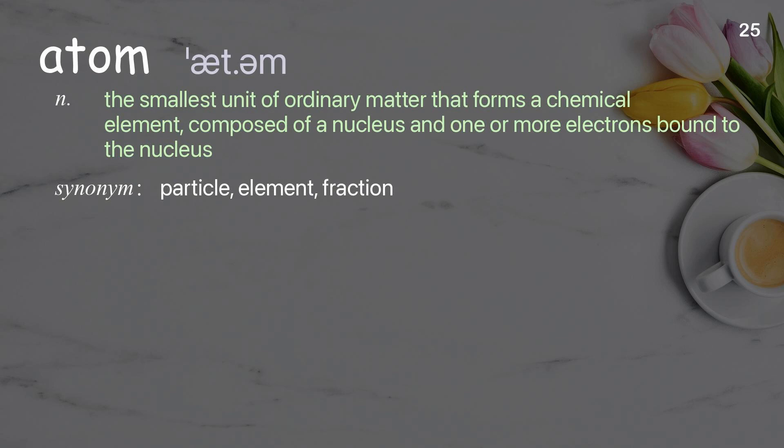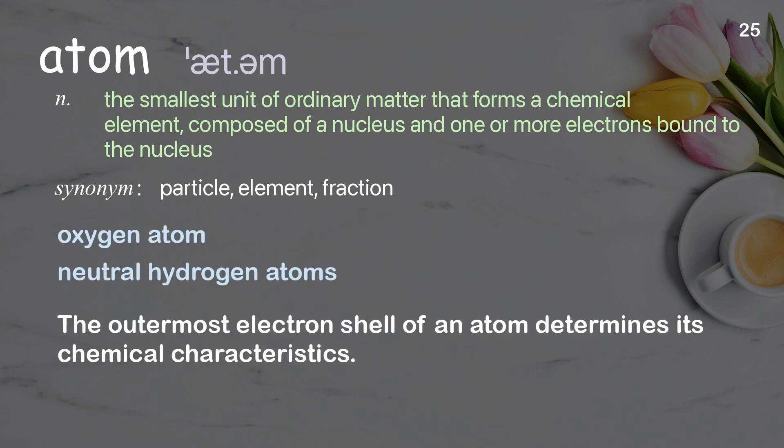Atom. The smallest unit of ordinary matter that forms a chemical element, composed of a nucleus and one or more electrons bound to the nucleus. Examples: Oxygen atom. Neutral hydrogen atoms. The outermost electron shell of an atom determines its chemical characteristics.